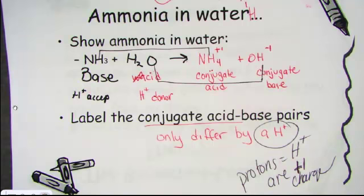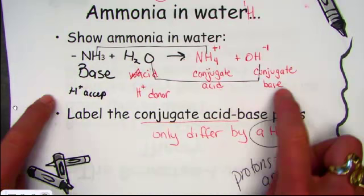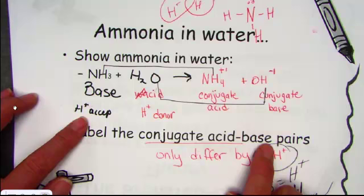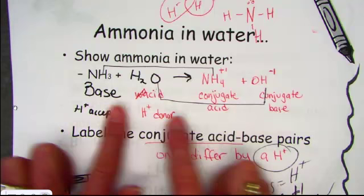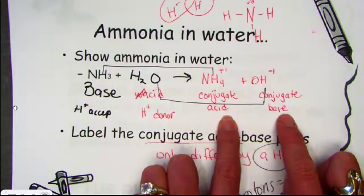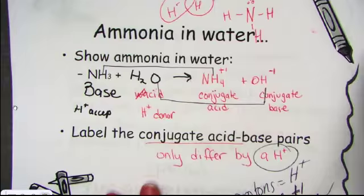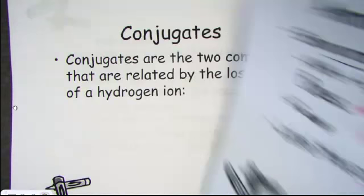We've identified conjugate pairs in our first Bronsted-Lowry example. The Bronsted-Lowry theory will always have conjugate pairs — there will always be one base and one acid on the left side of the arrow, producing a conjugate acid and a conjugate base on the right side. A base makes its conjugate acid, and an acid makes its conjugate base.